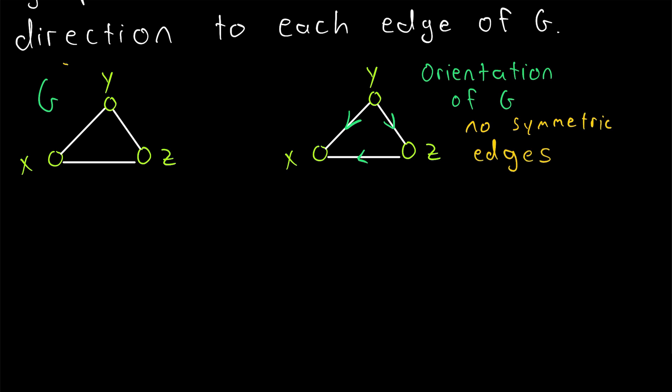Of course, as long as we're starting with a simple undirected graph, any orientation of the graph is never going to have symmetric edges. In order for an orientation of a graph to have symmetric edges, the original graph would need to have multiple edges joining the same pair of vertices.